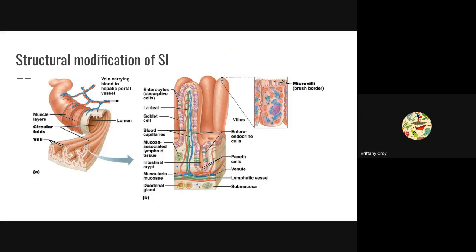If we zoom in to a villus, we see microvilli. These are basically the cytoplasm inside the cell extending to the outside. They look fuzzy, which is why we call it the brush border — it looks kind of like a fuzzy comb. There are enzymes found here that can finish digesting the food.